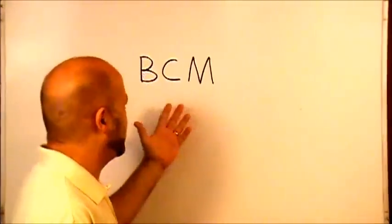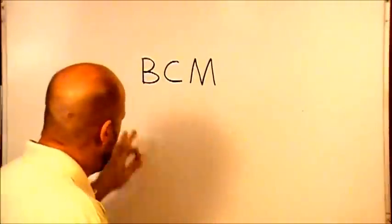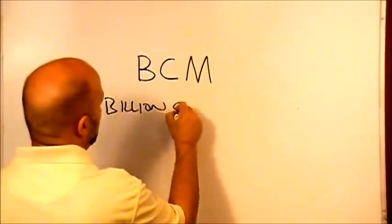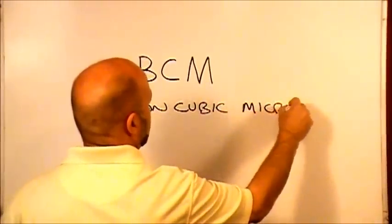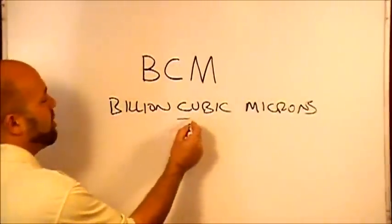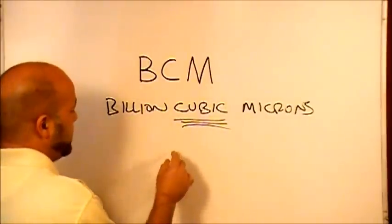So let's start off by, what is a BCM? You've all heard it: a BCM is 1 billion cubic microns. Right off the bat, when we talk about cubic, we know that we're talking about volume.